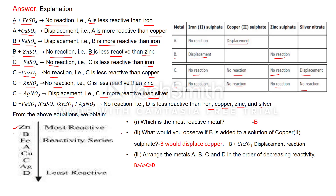The answers: the most reactive metal is B. If B is added to copper(II) sulfate, B is more reactive than copper so a displacement reaction takes place — B displaces copper from copper sulfate. The order of decreasing reactivity of metals A, B, C, and D is: B > A > C > D.